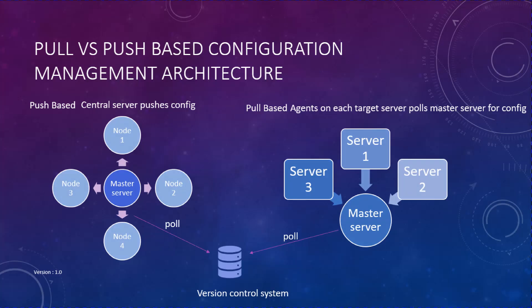Configuration management tools follow two different architectures: pull-based and push-based. In a pull-based architecture, you have a master server which stores all the configuration information, and then you install agents on each of the servers for which you want to manage the configuration. In this architecture, the agent will regularly pull the master server to check if there are any changes. Tools like Puppet and Chef use pull-based architecture.